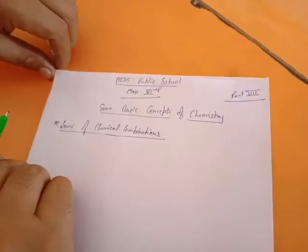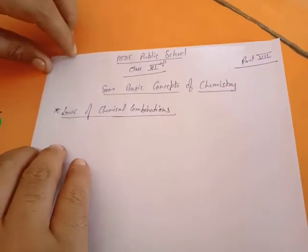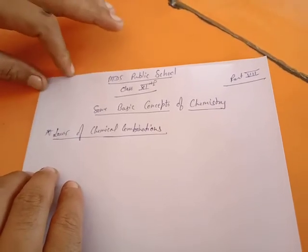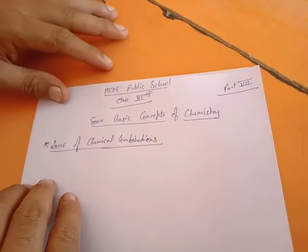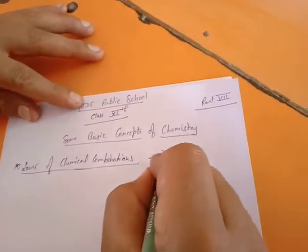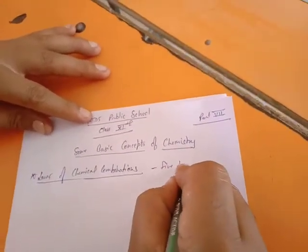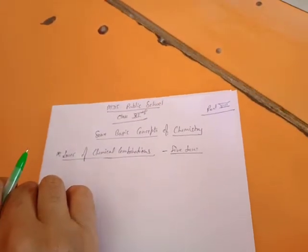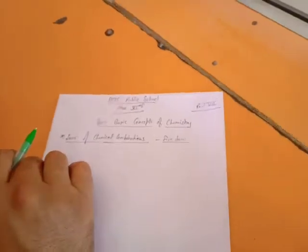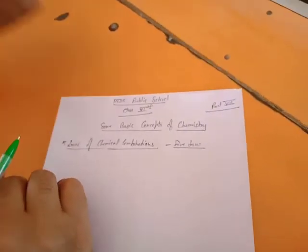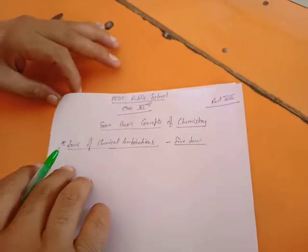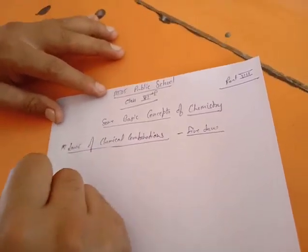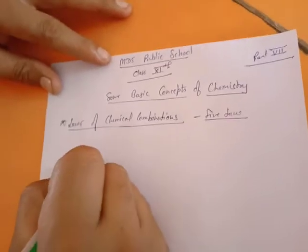Hello dear students. In the previous lecture on some basic concepts of chemistry, we studied the laws of chemical combination — five laws: the law of definite proportion, law of conservation of mass, law of gaseous volume, Avogadro's law, and the law of multiple proportion. Today's topic is Dalton's atomic theory.